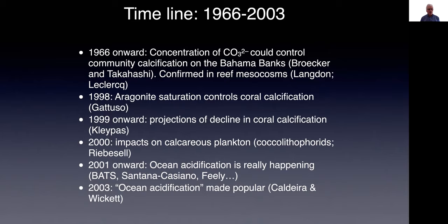The second period I'm looking at starts in 1966 onward, with the demonstration on the Bahamas Bank by Walker and Takahashi, and later confirmed on brief mesocosms, that the concentration of carbonate could control community calcification. Subsequently, in 1998, my colleagues and I showed that aragonite saturation states control coral calcification in the lab. Those data and others were used by Johnny Klepas to project the decline in coral calcification in the future.